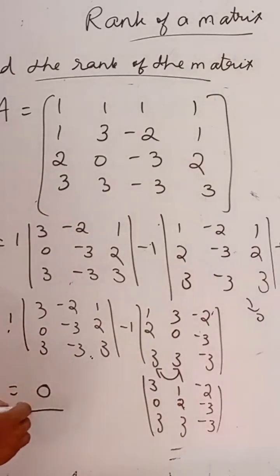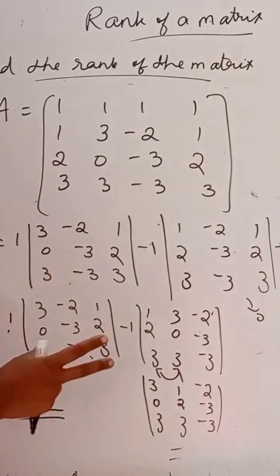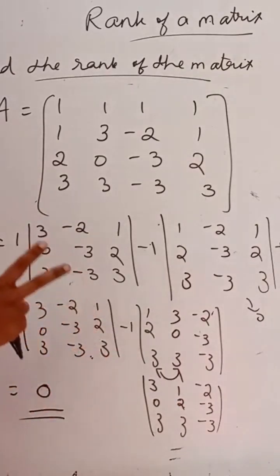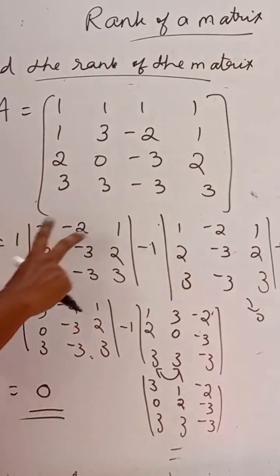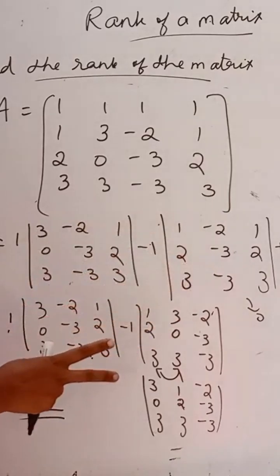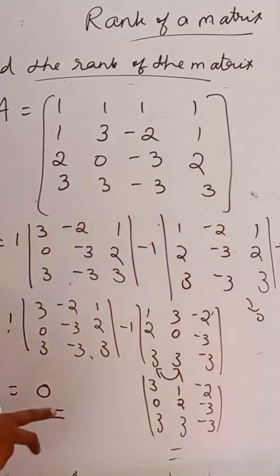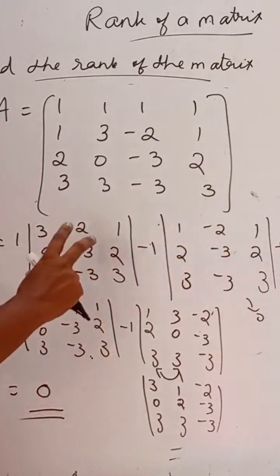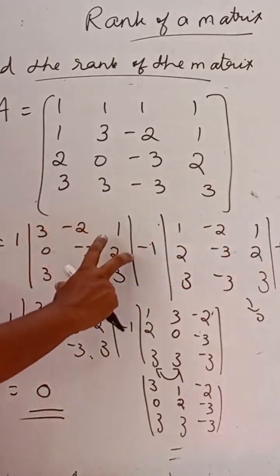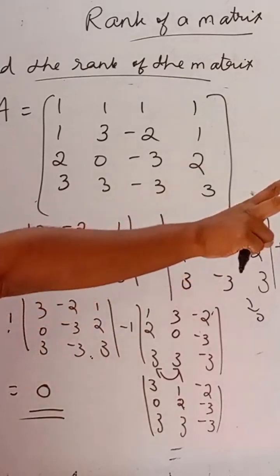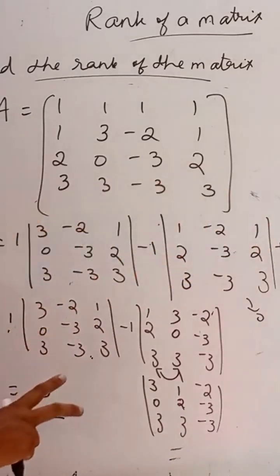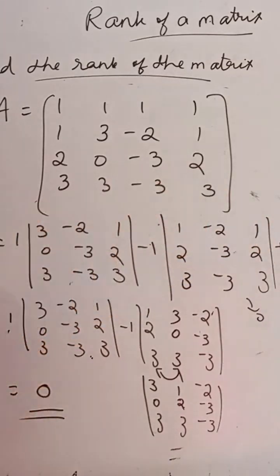Is equal to 0. So, by using the properties of determinants, we can find the determinant of these matrices very easily. Otherwise, we have to find the determinant of each of these determinants.